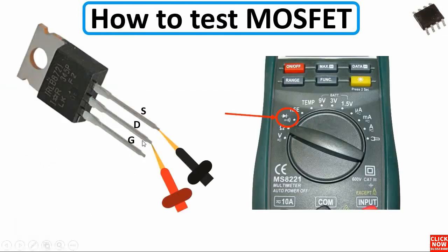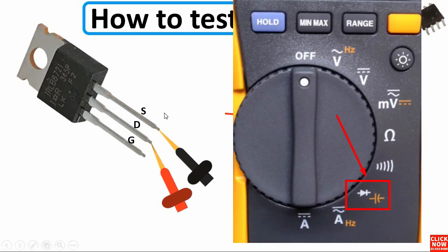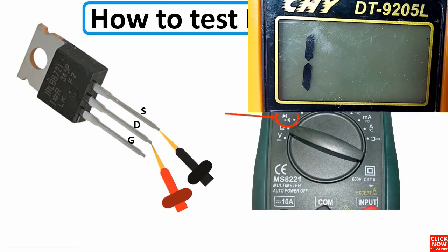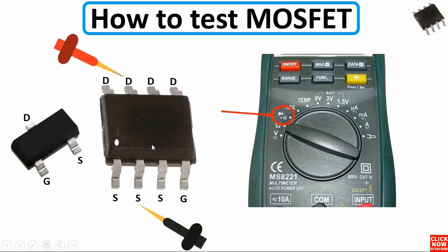So basically here we have a three-terminal MOSFET: gate, drain, and source. A good MOSFET is one that has a reading between drain and source. When you put the multimeter to the buzzer option or to the diode option and check between drain and source, you should get a reading. If you get continuity or a buzzer, it means the MOSFET is bad. The only reading you should get is between drain and source.